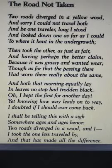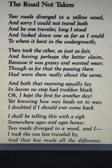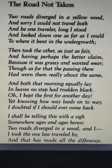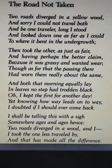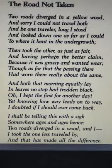In this first stanza, the poet is walking down a road and then there was a diversion — there were two different paths and he had to choose one out of them. As he was one person, he could travel on one road only. 'Yellow wood' means a forest with leaves which are wearing out and have turned yellow in color, meaning this is the season of autumn.